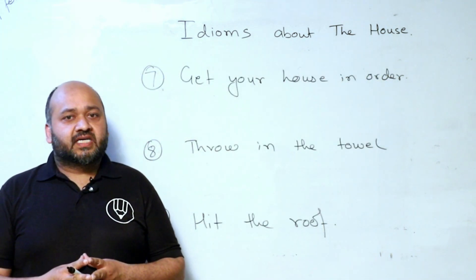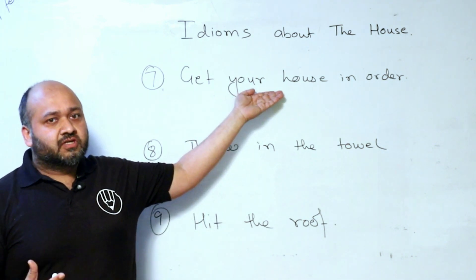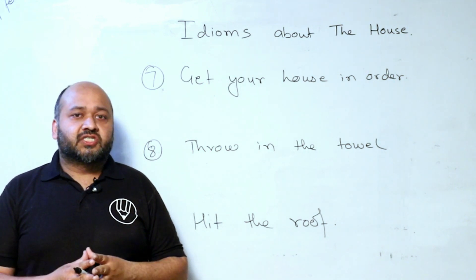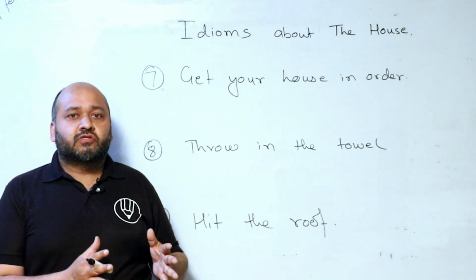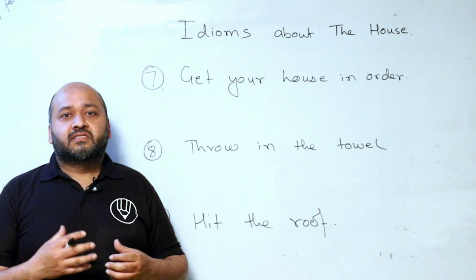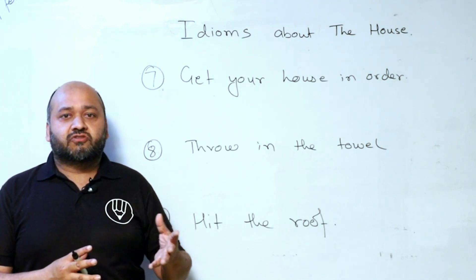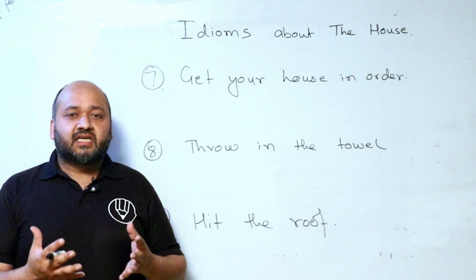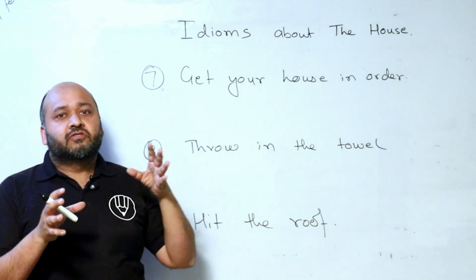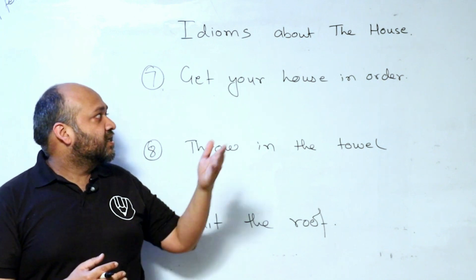Next three idioms. Get your house in order means solve your problems with your house and arrange your house. When you have problems with your house, you can make them better. If you have problems with others, be sure to check yourself first. What is your home situation? Get your house in order means solve your own problems first.